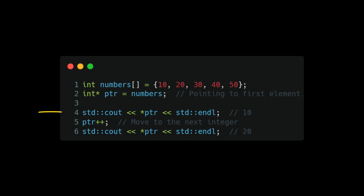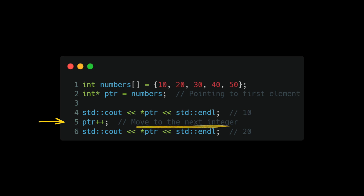If we print out the pointer we get the actual value of the first element, which is 10. If we increment the pointer, we advance the address to point to the next element, which is 20. Since an integer is four bytes, incrementing the pointer moves four bytes ahead to the next element. This technique is useful for low-level optimization — instead of using index-based for loops, we can traverse elements more efficiently with pointer arithmetic.